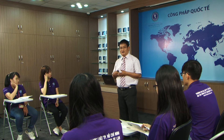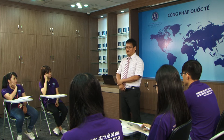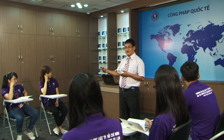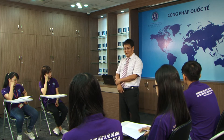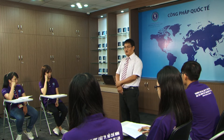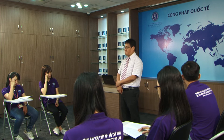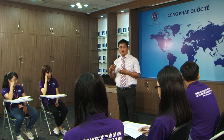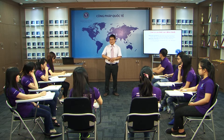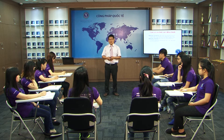Về tiêu chí thứ ba, căn cứ vào lĩnh vực điều chỉnh, loại thứ nhất là điều ước về chính trị. Ví dụ: vào năm 1955, các nước xã hội chủ nghĩa đã ký Hiệp ước Warsaw năm 1955; đối trọng với nó là Hiệp ước NATO. Vào năm 1997, sau khi Liên bang Xô Viết tan rã, Nga và Belarus đã ký Hiệp ước Liên minh Nga – Belarus năm 1997. Loại thứ hai là điều ước về kinh tế, điều chỉnh các quan hệ kinh tế thương mại và tài chính, ví dụ như hiệp định thương mại Việt Nam – Hoa Kỳ, các nghị định thư thanh toán, hoặc hiệp định vay vốn tín dụng với Ngân hàng Thế giới (World Bank) hay Quỹ Tiền tệ Quốc tế (IMF).